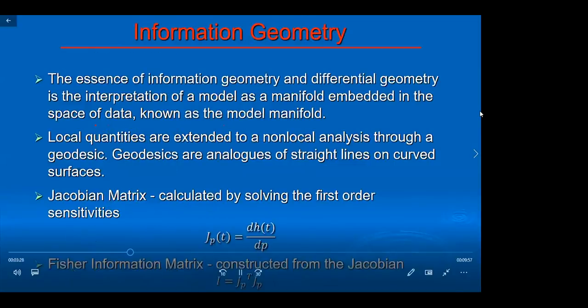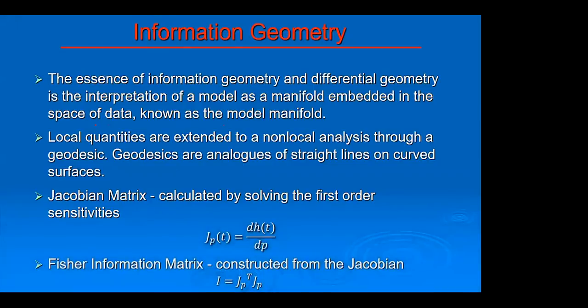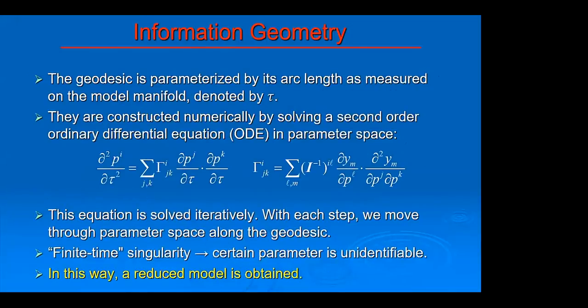When it comes to information geometry, the key idea is that the parametric model is interpreted as a manifold and parameters of the model act as coordinates. To find which parameters are important and which are not, we have to calculate geodesics. This is done by solving these second order ordinary differential equations.